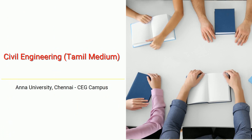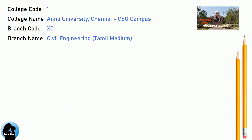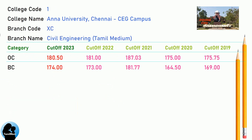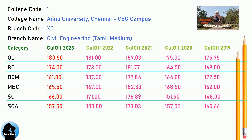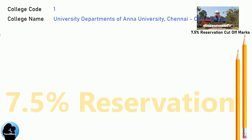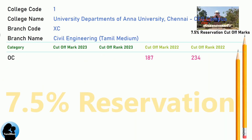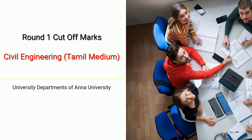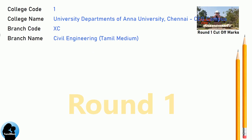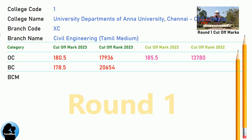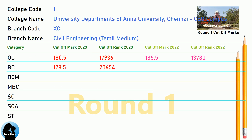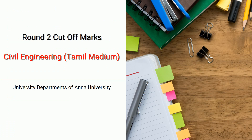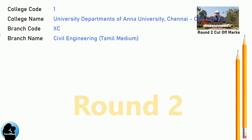DNA Cut-Off for Anna University Chennai CEG Campus in Civil Engineering, Tamil Medium. DNA 7.5 Reservation Cut-Off for Anna University Chennai CEG Campus in Civil Engineering, Tamil Medium. DNA Round 1 Cut-Off for Anna University Chennai CEG Campus in Civil Engineering, Tamil Medium. DNA Cut-Off for Anna University Chennai CEG Campus in Civil Engineering, Tamil Medium. DNA Round 2 Cut-Off for Anna University Chennai CEG Campus in Civil Engineering, Tamil Medium.